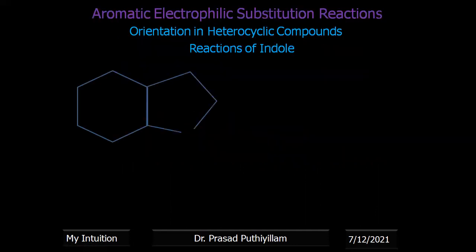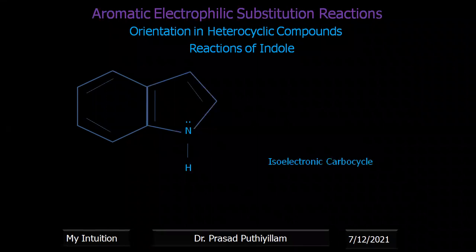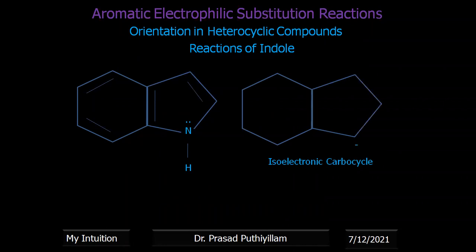First one is indole. Indole is actually a pyrrole fused to benzene ring. It is isoelectronic carbocyclic — similar to that hexagonal ring and a pentagonal ring — having a negative charge on one of the carbons to maintain the aromatic rule. This is the isoelectronic carbocyclic for indole. Now this is a 10 pi electron system; therefore it is aromatic in nature. I'm giving a detailed class on different aromatic compounds, non-aromatic compounds, as well as anti-aromatic compounds.